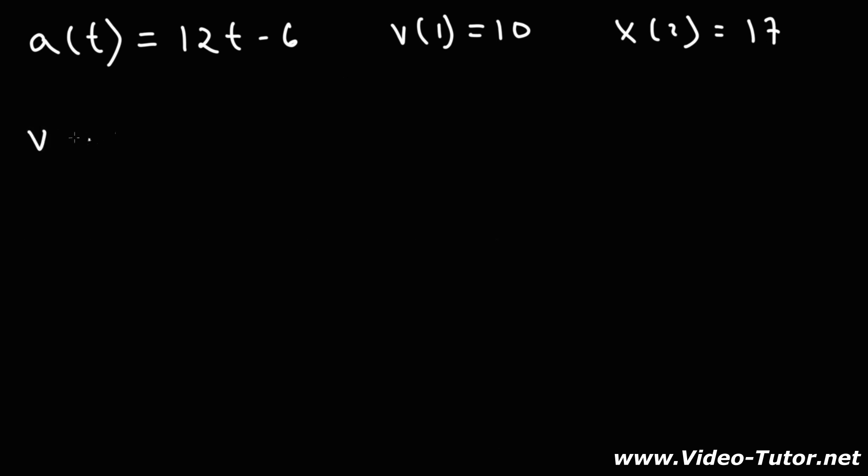So let's start with the velocity function. V of t is going to be the integral of the acceleration function, 12t minus 6, dt. The antiderivative of 12t, using the power rule, if you want to find the antiderivative of a variable raised to a constant, it's going to be x raised to the n plus 1 divided by n plus 1, and then plus the constant c. So the antiderivative of t to the first power is going to be t to the second power divided by 2.